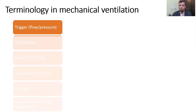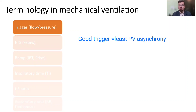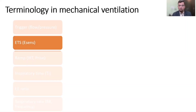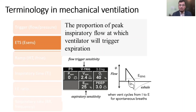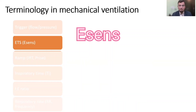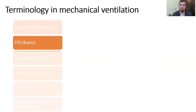Trigger refers to the signal that causes inspiration. When the patient is set on assist control mode or spontaneous mode, a trigger setting is required. An optimal trigger reduces patient-ventilator dyssynchrony and reduces patient discomfort of breathing. Triggers can be of two types mainly: flow trigger and pressure trigger. Neural and shape signaling are the latest types of trigger mechanism. ETS stands for expiratory trigger sensitivity — it is the proportion of peak expiratory flow at which the ventilator will start cycling. By default, ETS is set at 25% of peak expiratory flow.